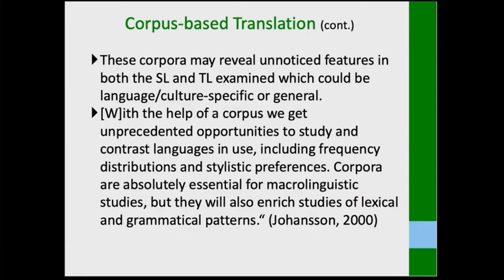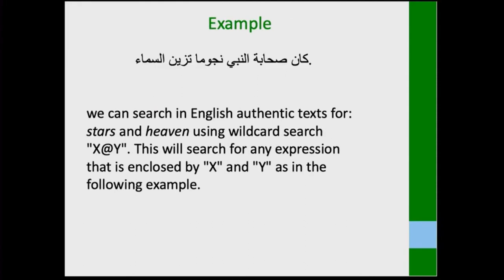Let me talk about something I use practically. I have a sentence which you can see: كان صحابة النبي نجوما تزيين السماء. You can search for every single word in dictionaries, you can use Google — it's up to you. But what I did, I used a concordancer. I used some texts which I think are reliable and authentic, and I wanted my translation to be more authentic and also have a literary style.